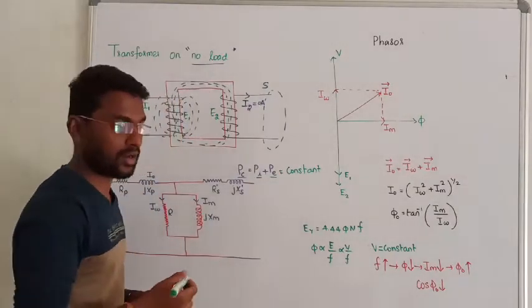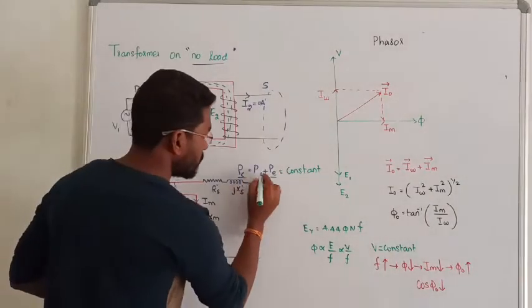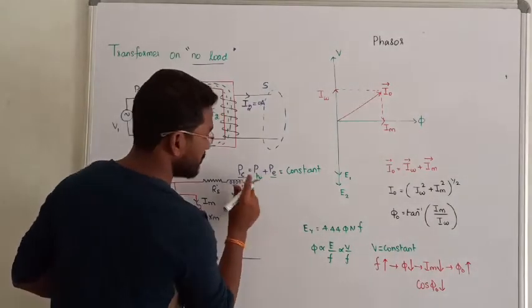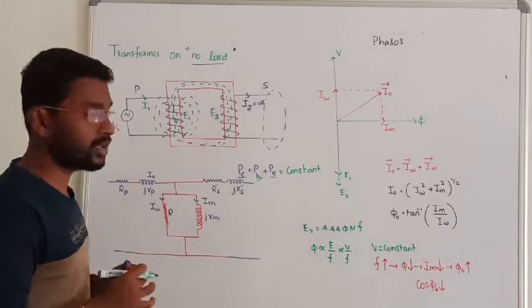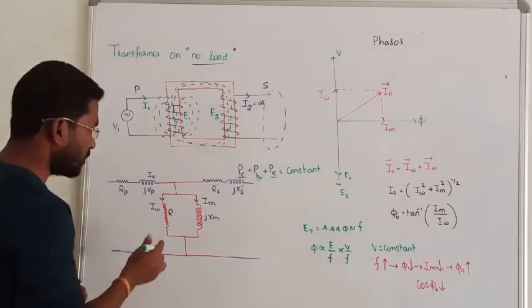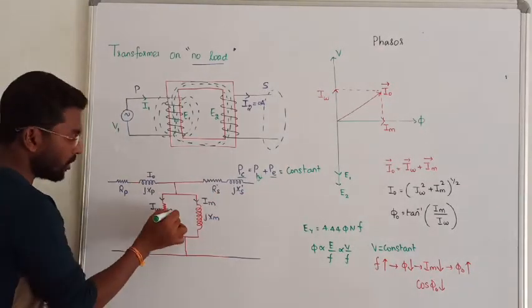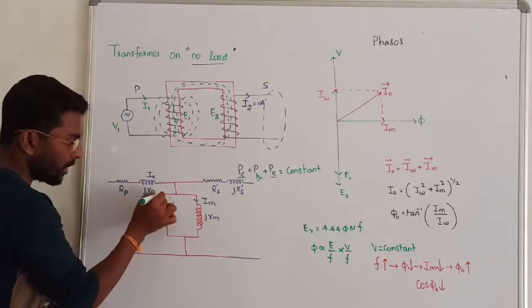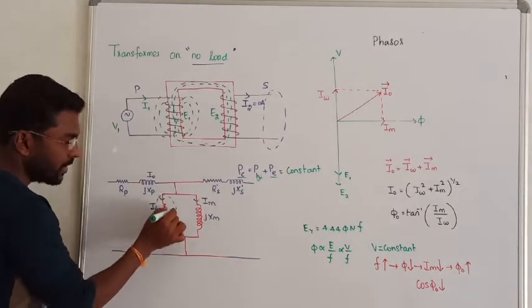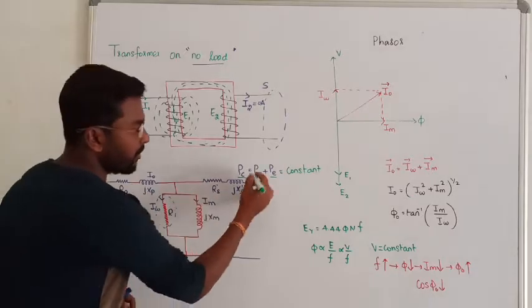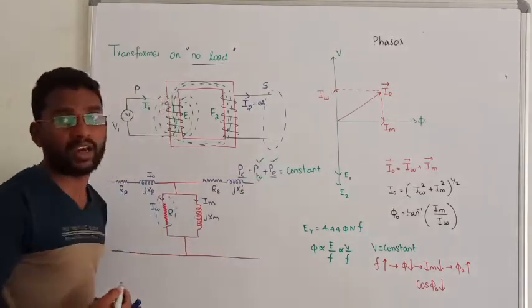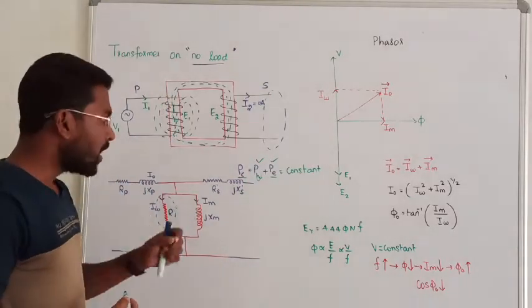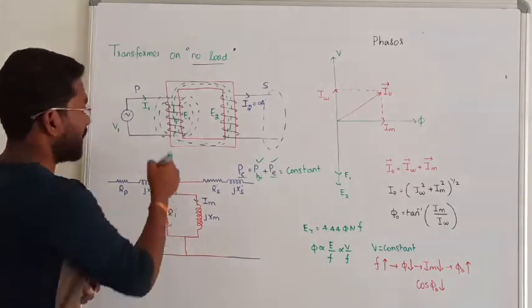There are two types of core losses: one is called hysteresis losses and another one is called eddy current losses. The core resistance of the transformer is responsible for these hysteresis and eddy current losses.